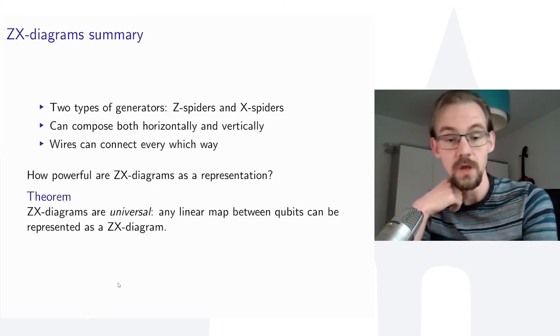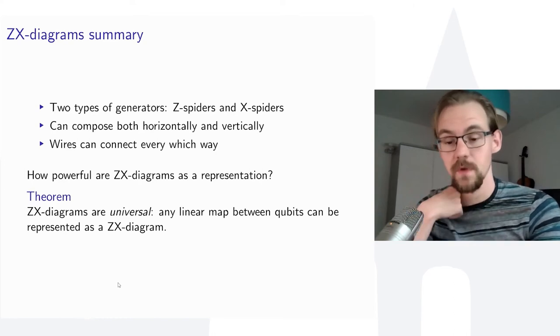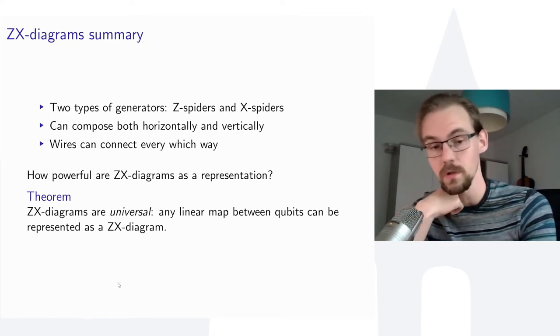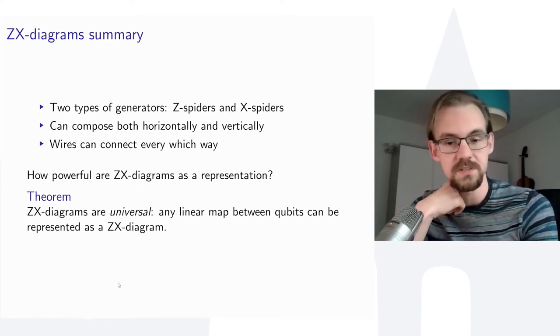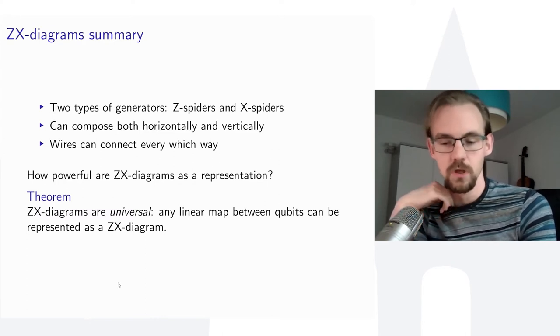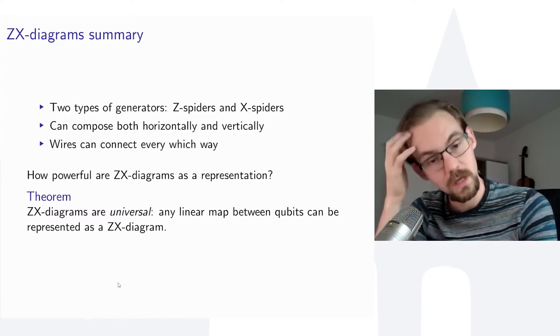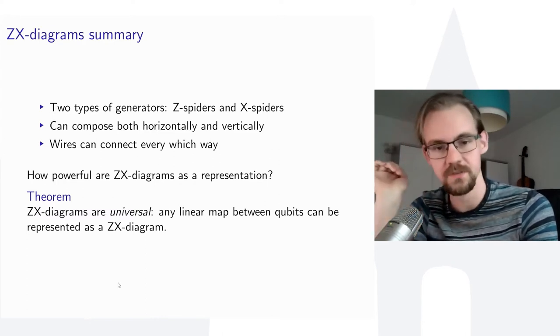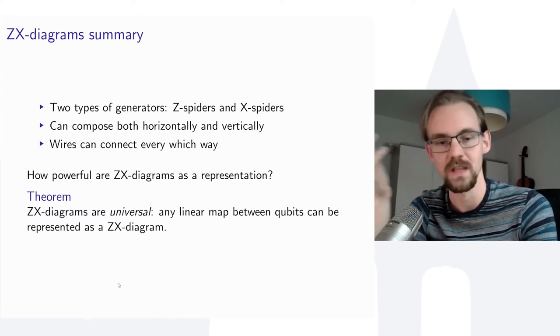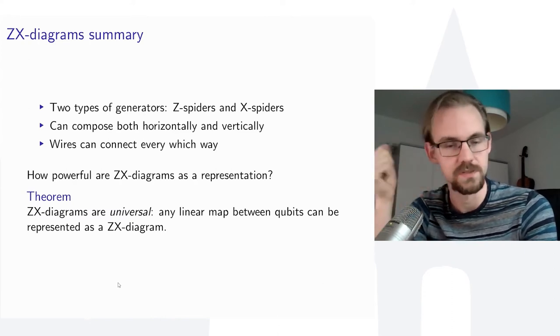ZX diagrams are universal: any linear map between qubits — not just unitaries, but also states and post-selections — can be represented as a ZX diagram.